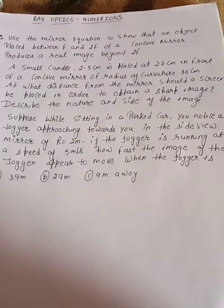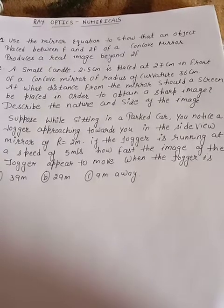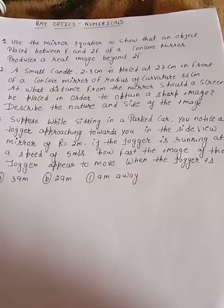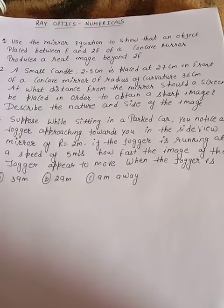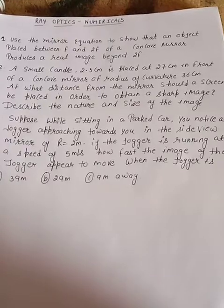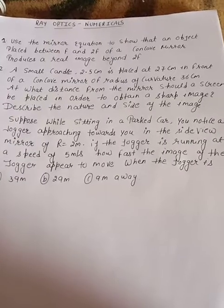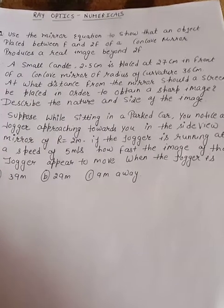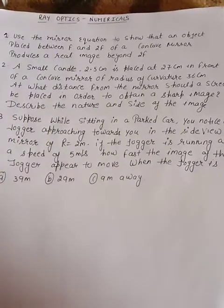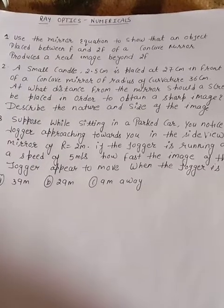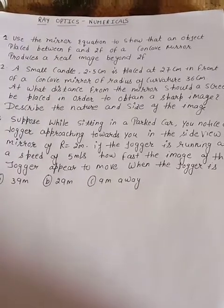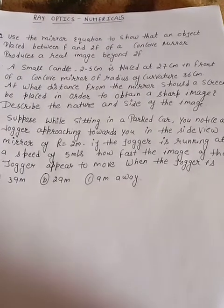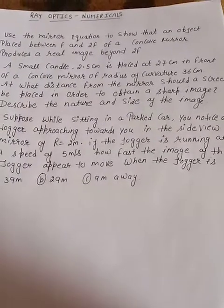The next question: a small candle of 2.5 cm length is placed at 27 cm in front of a concave mirror. It is placed 27 cm in front of the concave mirror, which has a radius of curvature of 36 cm. That means focal length f can be obtained by dividing R by 2.